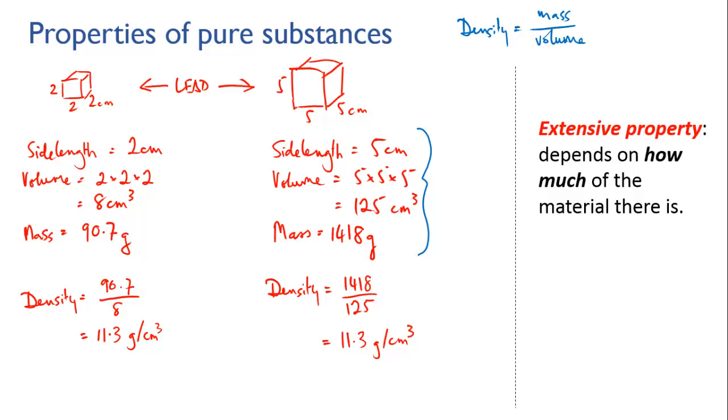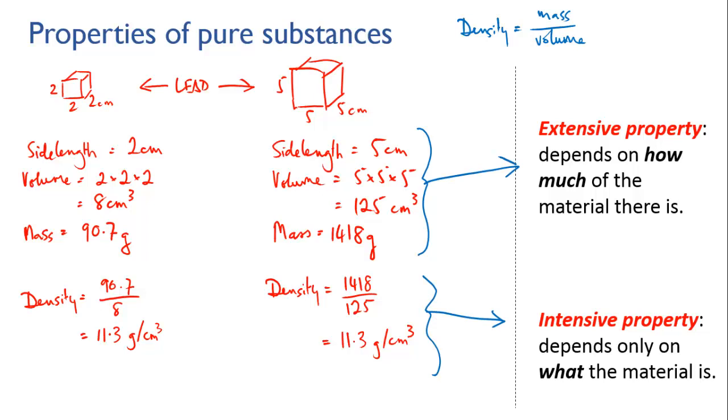So if all the particles that a substance is made of are identical, and in this case they're all lead atoms, and if they're always arranged in the same way, then the density of the substance can never vary. This kind of property is called an intensive property. It is internal or intrinsic to the substance, since it's determined by the type of atom or molecule that makes the substance up, and not how many of them there are.